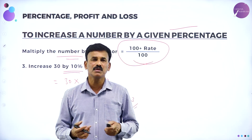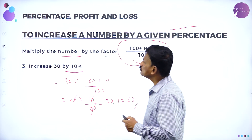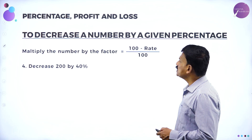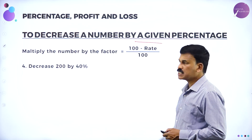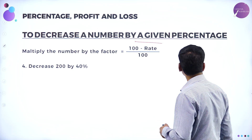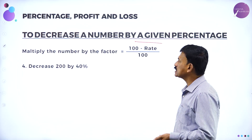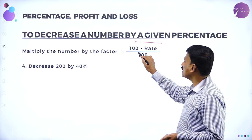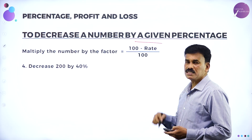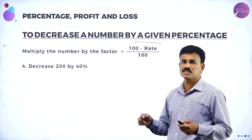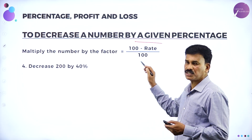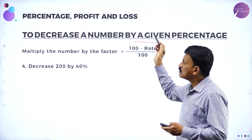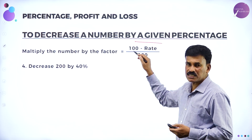Now move on to the next concept: to decrease a number by a given percentage, just multiply the number by the factor 100 minus rate divided by 100. Whereas for increase it is 100 plus rate divided by 100.